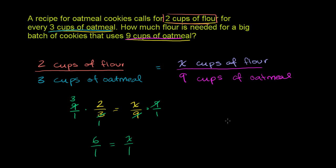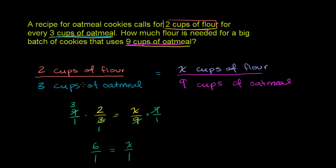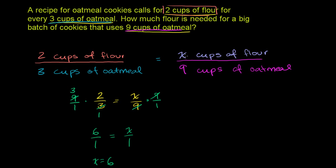Or you can just view both. 6 over 1 is the same thing as 6. x over 1 is the same thing as x. So we get x is equal to 6. So we've just figured out if the recipe calls for 2 cups of flour for every 3 cups of oatmeal, that means that we need 6 cups of flour for every 9 cups of oatmeal. So we've figured out that x is equal to 6.